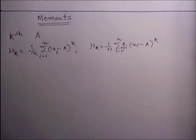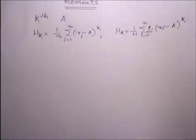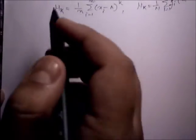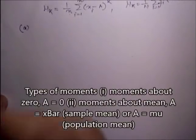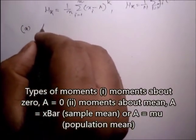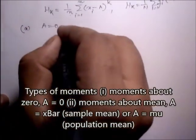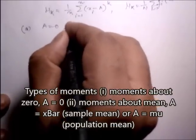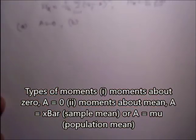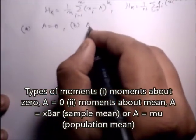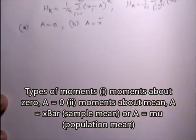Two common types of moments are: first, moments about 0 where a equals 0, and second, moments about the mean where a equals the mean.